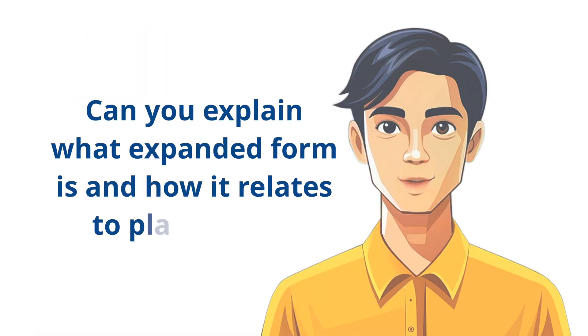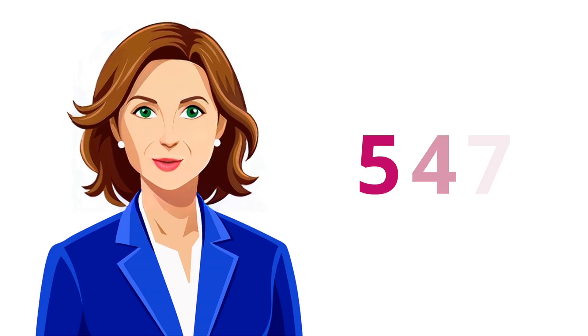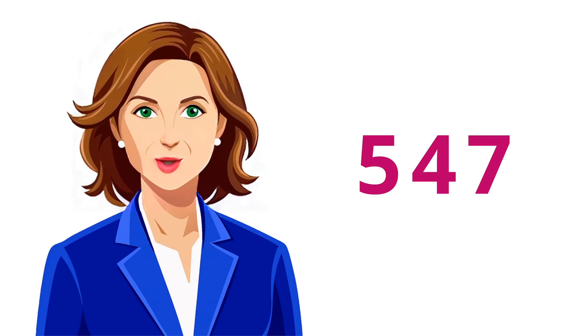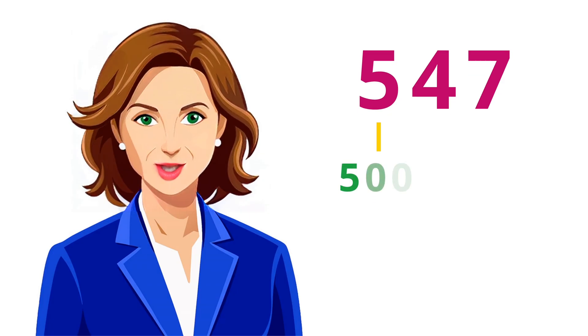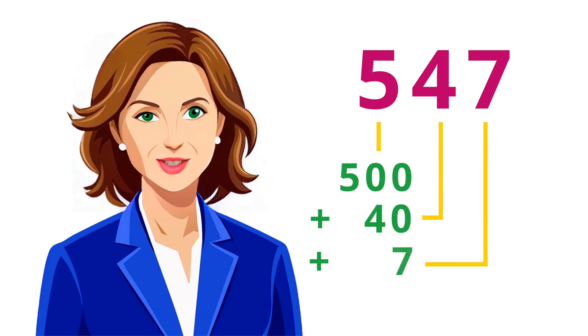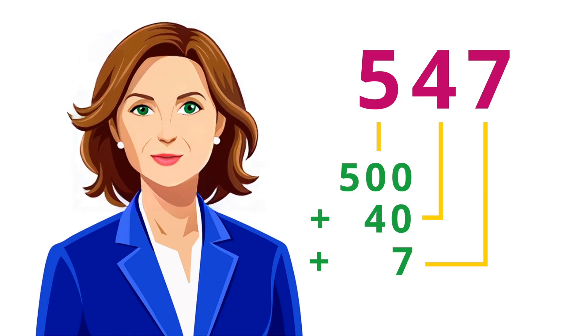Can you explain what expanded form is and how it relates to place value? Expanded form breaks down a number to show the value of each digit based on its place. For example, the number 547 in expanded form is 500 plus 40 plus 7. This breakdown helps us see the contribution of each place value to the whole number.